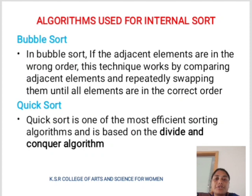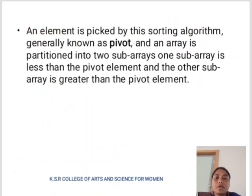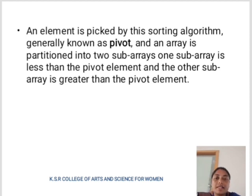Quick Sort is one of the most efficient sorting algorithms and it is based on the Divide and Conquer algorithm. An element is picked by this sorting algorithm, generally known as the Pivot, and an array is partitioned into two sub-arrays — one sub-array is less than the Pivot element and another sub-array is greater than the Pivot element.